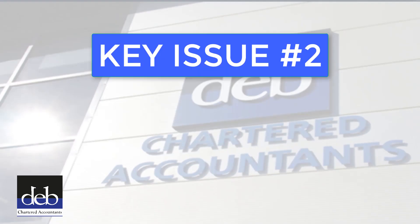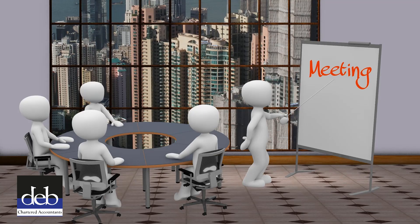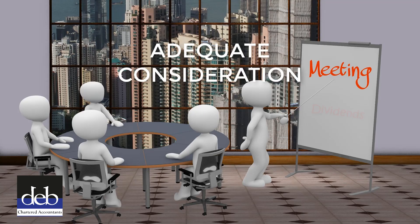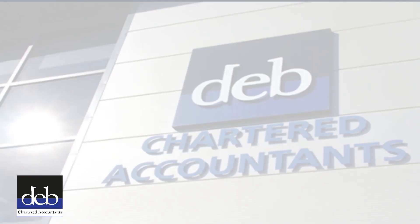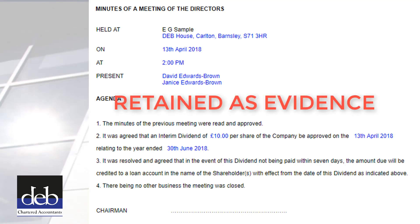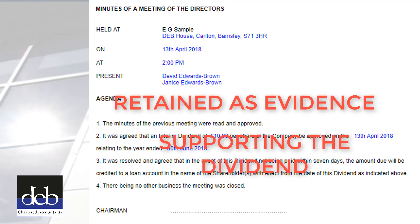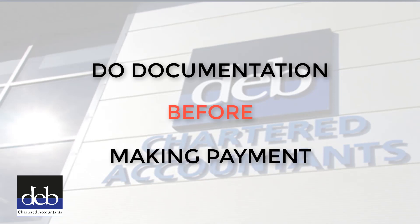Key Issue 2: Board Approval. Before a dividend is paid it has to be considered and approved by the board of directors. A minute of the meeting of the directors to approve the dividend should be produced and retained as evidence that this important step has been done. It's important that this is done before the dividend is paid and not after it.